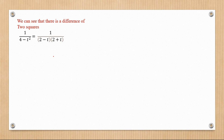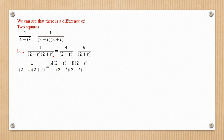We let 1/((2 - t)(2 + t)) equal A/(2 - t) + B/(2 + t). Finding the LCM and cancelling the denominators, we're left with 1 = A(2 + t) + B(2 - t).